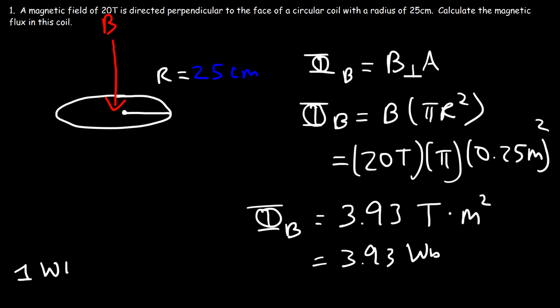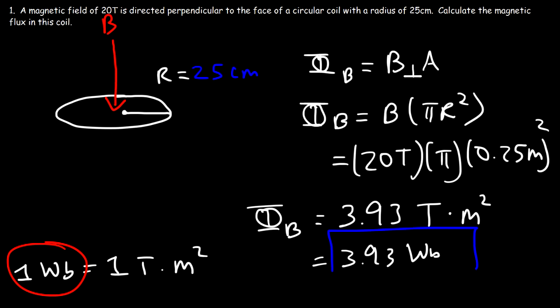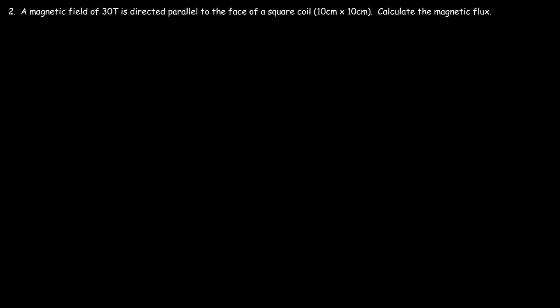One weber is 1 tesla times 1 square meter — that's the standard unit for magnetic flux. So that's the answer for problem one. Number two: a magnetic field of 30 tesla is directed parallel to the face of a square coil — calculate the magnetic flux.